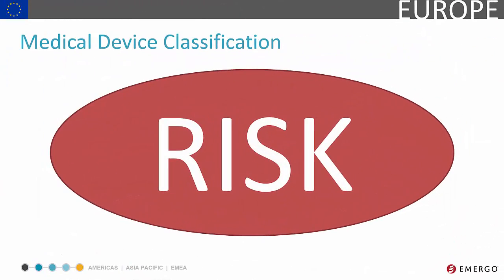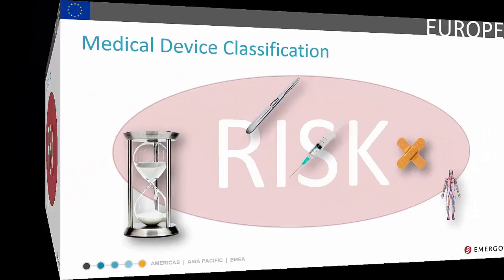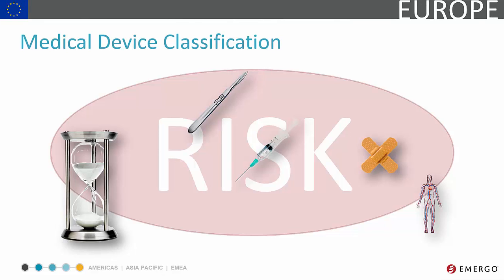Medical devices are classified based on the level of risk the device presents to the human body. This is determined by examining several criteria, primarily the duration of contact with the body, degree of invasiveness, and local versus systemic effect.